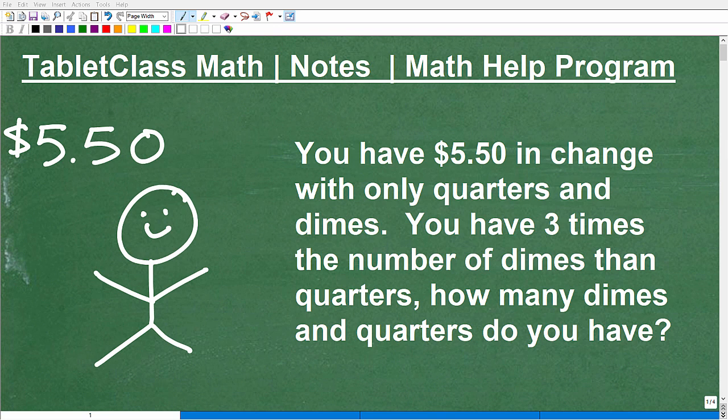But it's a great illustration of how we use equations to solve word problems, an application of algebra. I think you're going to find it very interesting. Let's actually read the problem. You have $5.50 in change with only quarters and dimes. You have three times the number of dimes than quarters. How many dimes and quarters do you have? That is the problem.